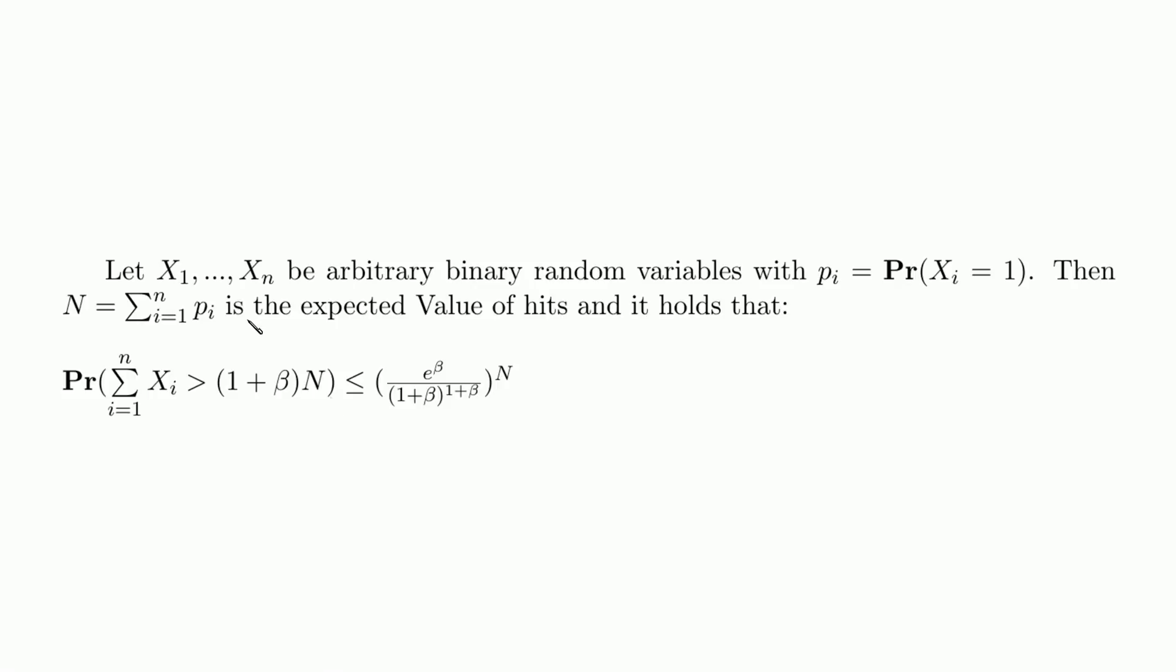Let us restate the problem. Given arbitrary binary random variables, xi through xn, where pi is the probability that xi equals 1, then n equals the sum of the probabilities is the expected value of a random experiment.